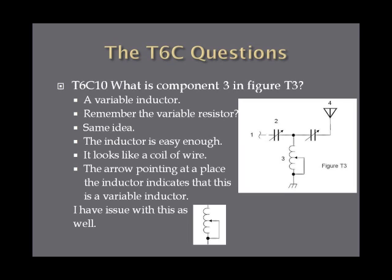What is component three in figure T3? It looks like the schematic for an inductor with an arrow pointing towards the center of it. If you remember the similar symbol for the variable resistor, this is a variable inductor — you can tell by the arrow pointing at it, which makes it variable. The instructor notes other symbols are sometimes used for the same thing, but just remember: arrow pointing at the middle of the inductor means variable inductor, and this is the one you need to know for the exam.